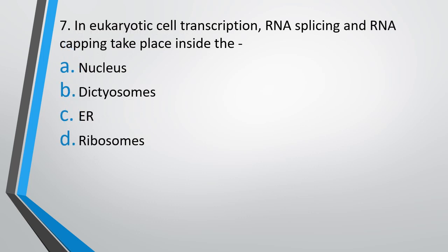Question number 7. In eukaryotic cell transcription, RNA splicing and RNA capping takes place inside: nucleus, dictyosomes, endoplasmic reticulum, or ribosomes? The correct answer is option A — they take place inside the nucleus.